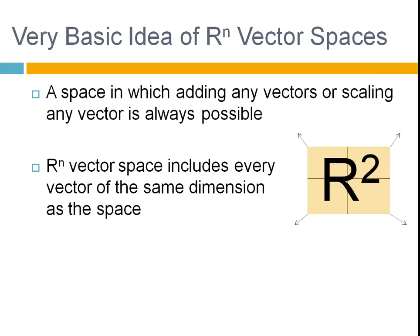This is R^2. N is 2, which is basically all of the 2D vectors. It's this plane and it just goes on endlessly. Every single possible vector is in that space.